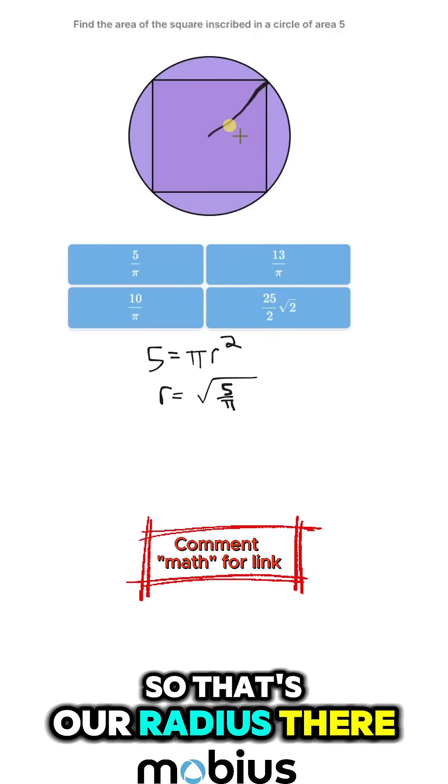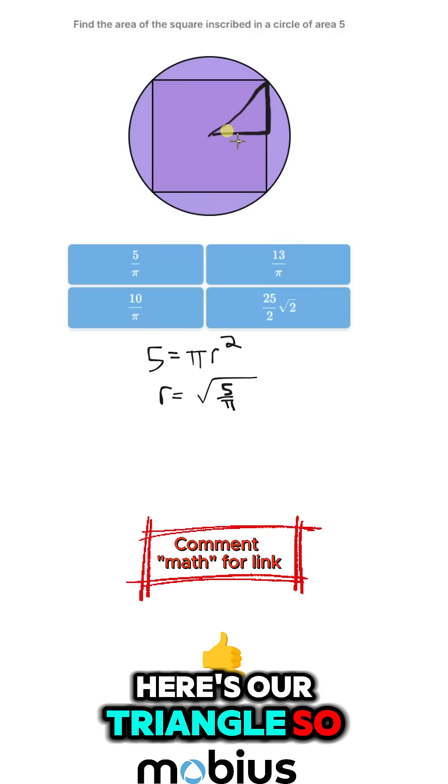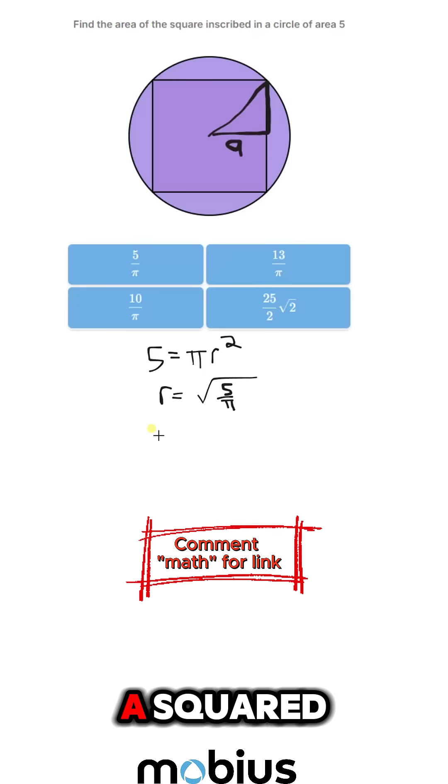So that's our radius there. So let's try and find, using Pythagoras, here's our triangle. So if we call this a, so r squared is 2a squared.